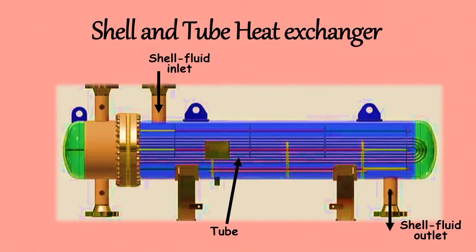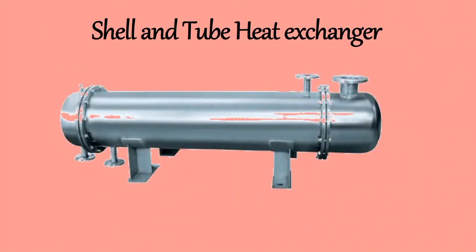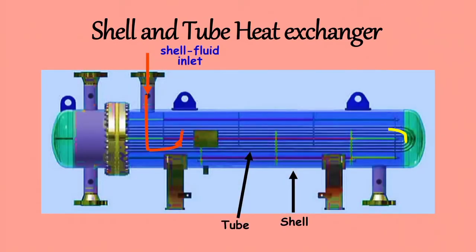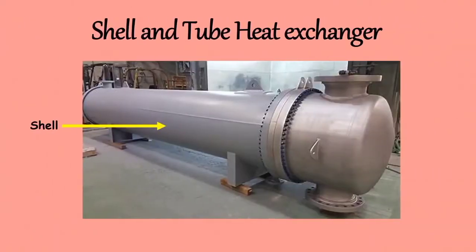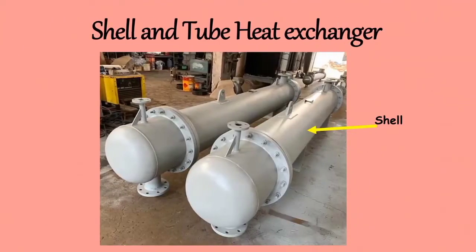The first component is the Shell. The shell is the outer covering of the heat exchanger. It is usually a cylindrical casing through which one of the fluids flows in one or more passes. It is commonly made up of carbon steel. It may be cut to the required length from a standard pipe up to 60 cm diameter, or fabricated from plates. The minimum thickness of a shell made of carbon steel varies from 5 mm to 11 mm, depending upon the diameter.